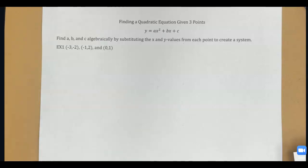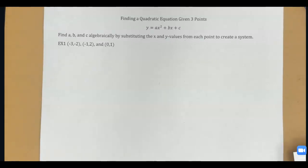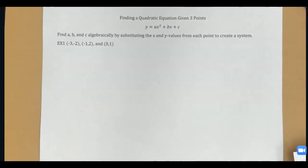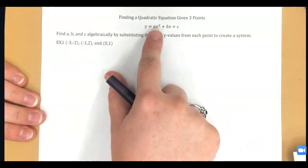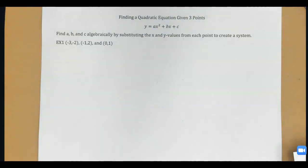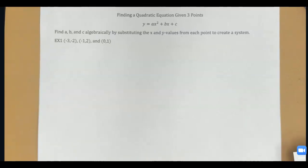We have been practicing writing quadratic equations given different things — given our solutions, given the vertex and a point. But what happens if I'm given three random points on the graph, none of them being the vertex? What I want to do is find A, B, and C in standard form by substituting the X and Y values from each point into three separate equations and make a system. We actually did something similar earlier in the year with matrices, but we're going to do it by hand today.